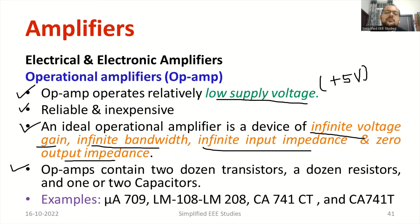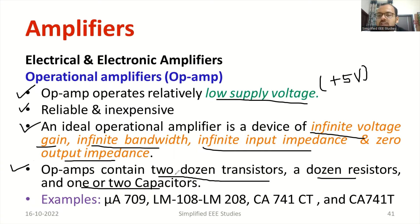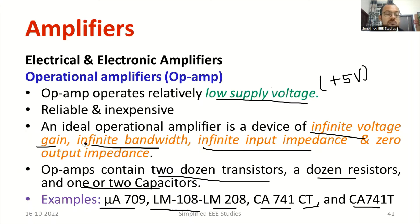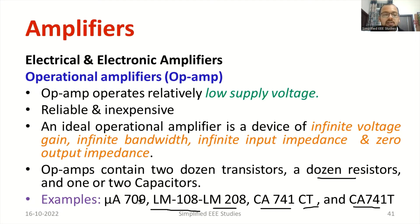Operational amplifier comprises of two dozen transistors or eight dozen transistors — different configurations are available. Some basic ICs of op-amp available in the market include Mu-A709, LM108, LM208, CS741CT, and CS741T. There are many more. If you want, you can download the datasheet. The datasheet gives more information about performance, temperature range, and the different varieties of configuration.